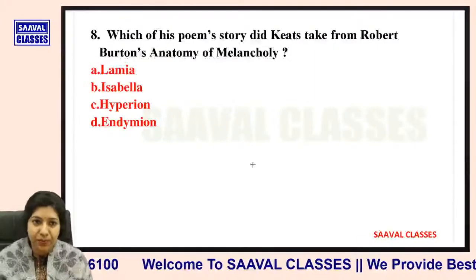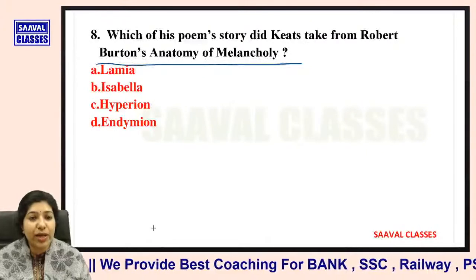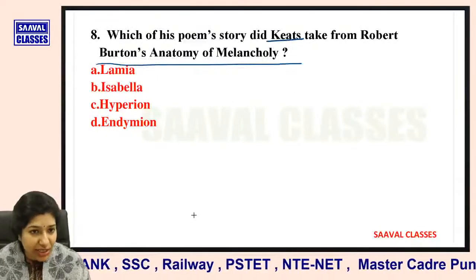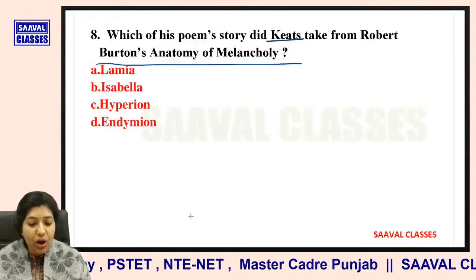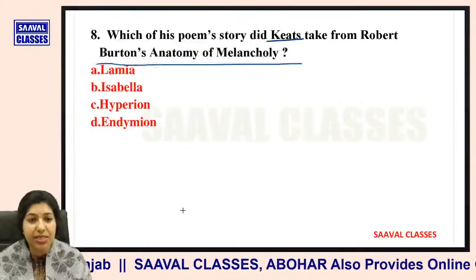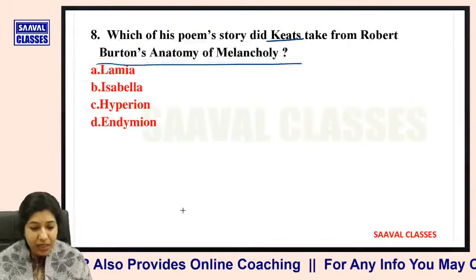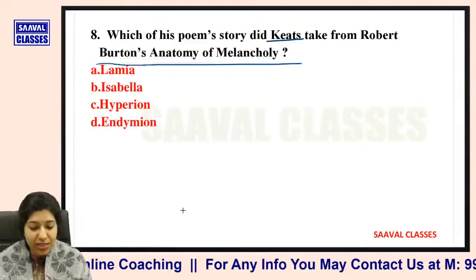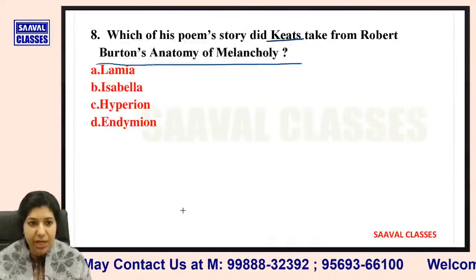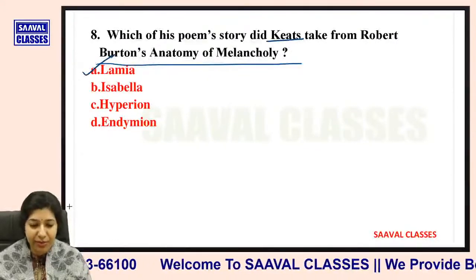Question number eight: For which of his poems did Keats take the story from Robert Burton's Anatomy of Melancholy? Lamia, Isabella, Hyperion, or Endymion? The answer is Lamia — the poem for which Keats took inspiration from the Anatomy of Melancholy.